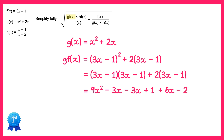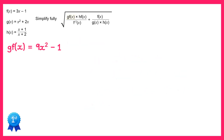Now we can simplify. We've got 9x squared. If we collect up the x terms they actually cancel to give 0. And then the constant terms: plus 1 take away 2 is negative 1. So gf of x is 9x squared minus 1.